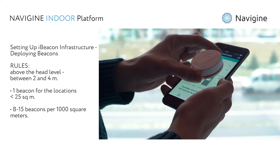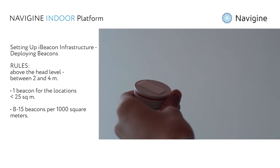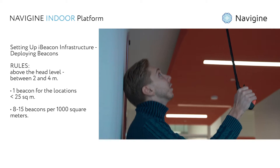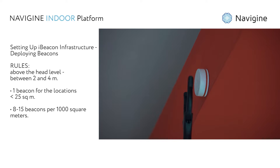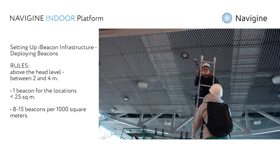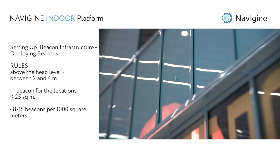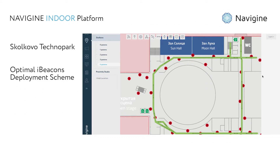It's best to place them on the ceiling. If that's not possible, attach them to the walls. Place the beacons evenly across the location — the more beacons you use, the higher accuracy you can get. This picture demonstrates an optimal deployment scheme of 40 beacons for Skolkovo Technopark.